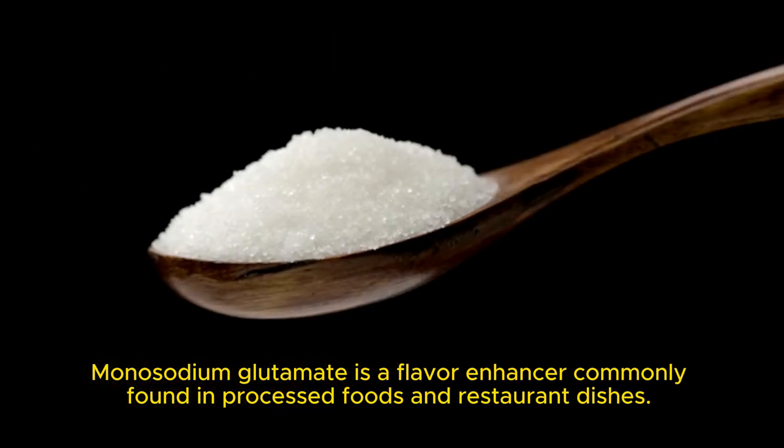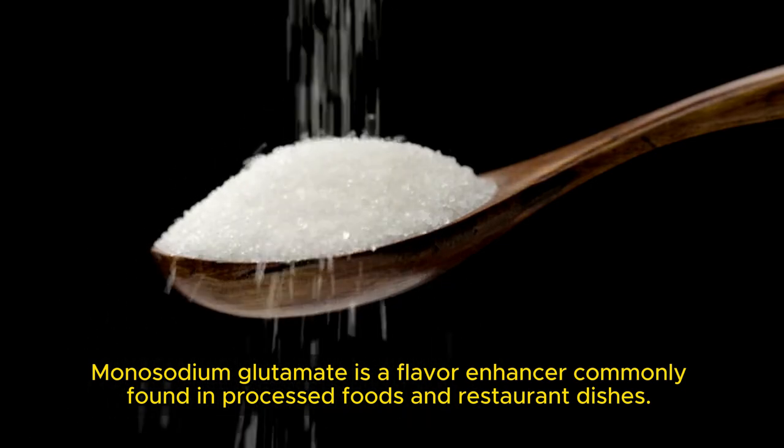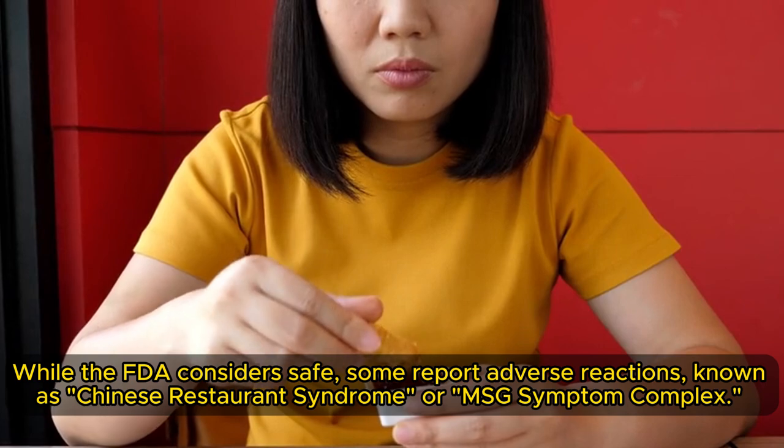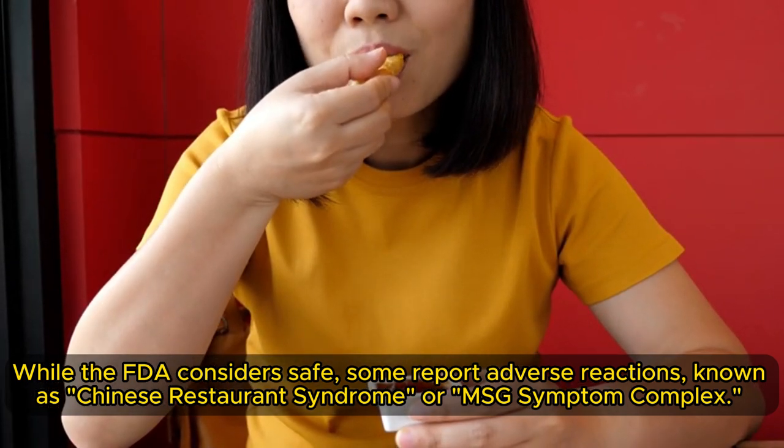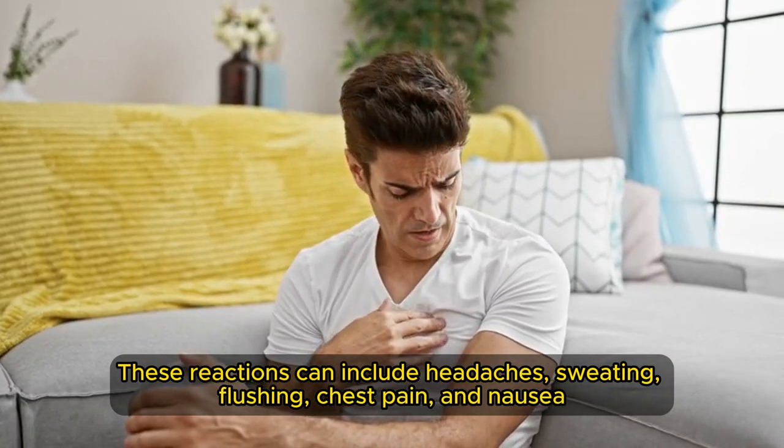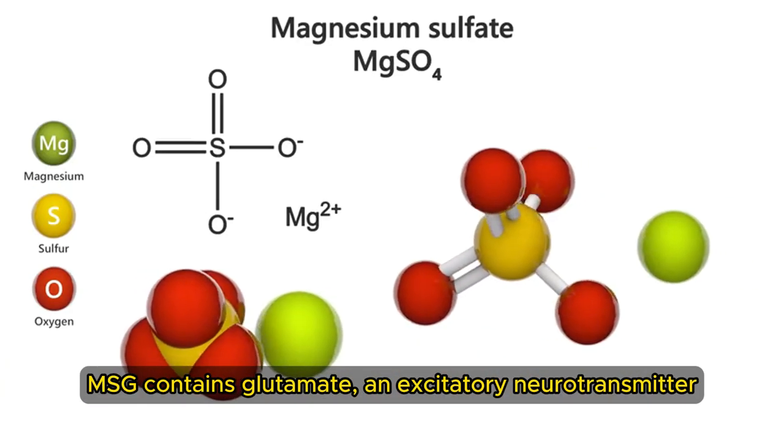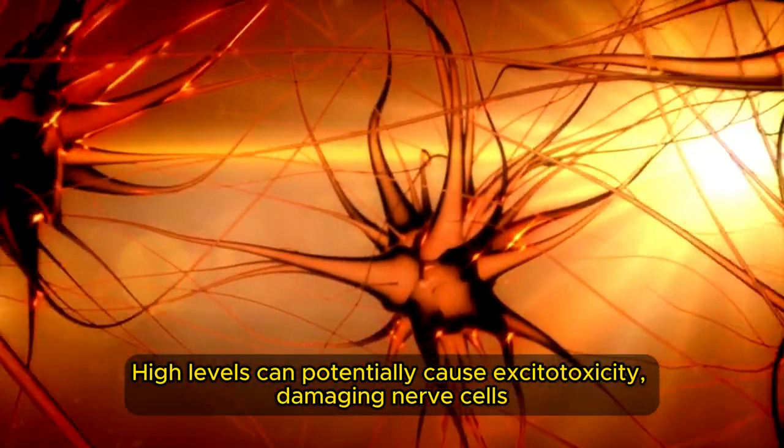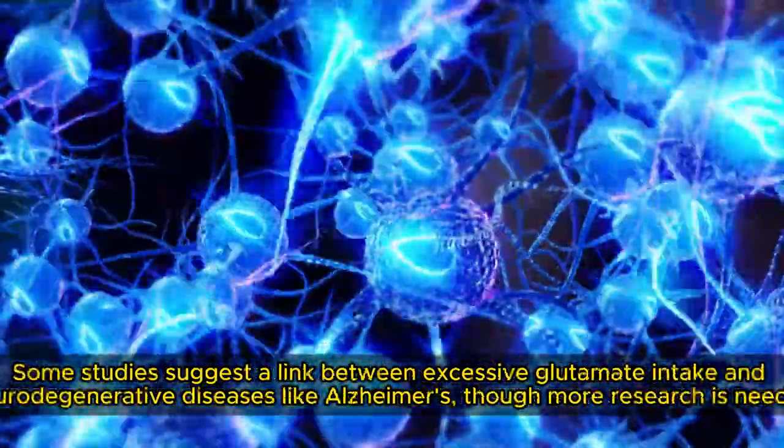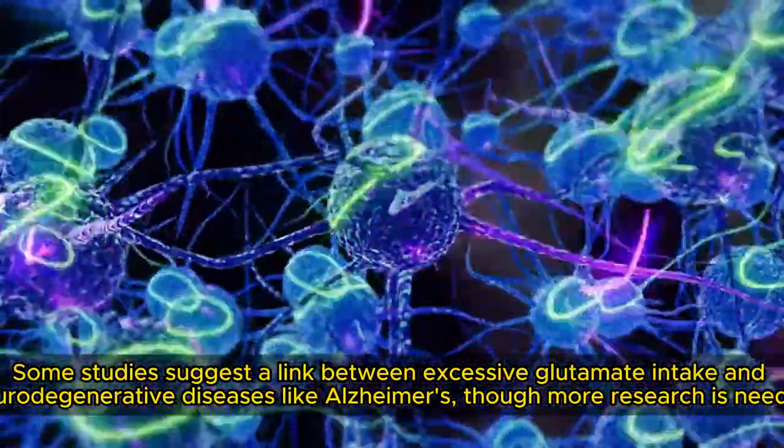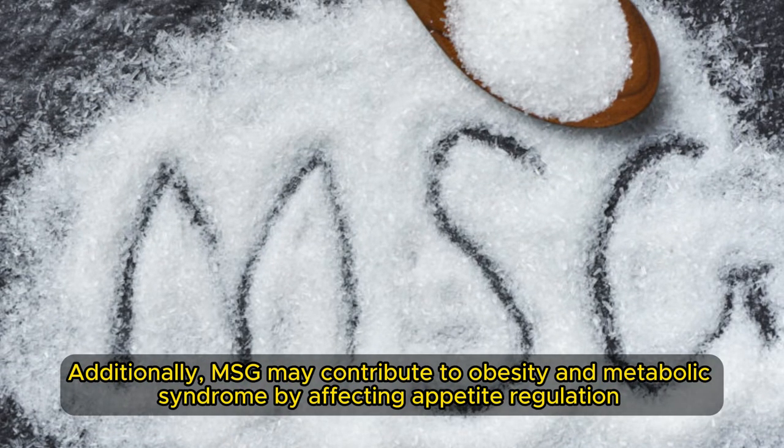Monosodium glutamate is a flavor enhancer commonly found in processed foods and restaurant dishes. While the FDA considers it safe, some individuals report adverse reactions known as Chinese restaurant syndrome or MSG symptom complex. These reactions can include headaches, sweating, flushing, chest pain, and nausea. MSG contains glutamate, an excitatory neurotransmitter. High levels can potentially cause excitotoxicity, damaging nerve cells. Some studies suggest a link between excessive glutamate intake and neurodegenerative diseases like Alzheimer's, though more research is needed.